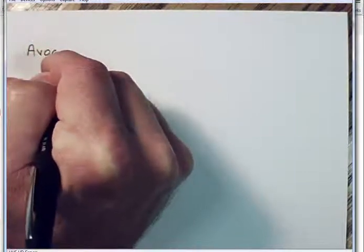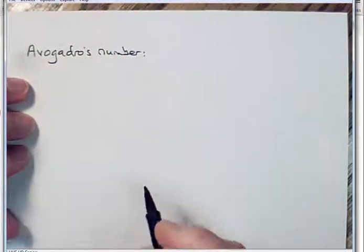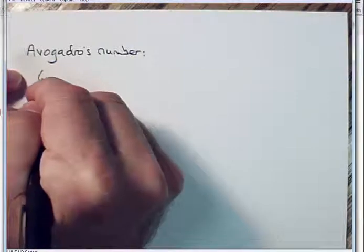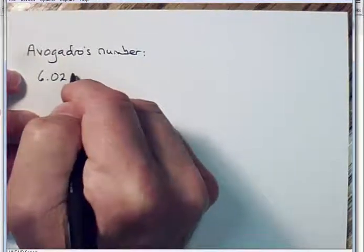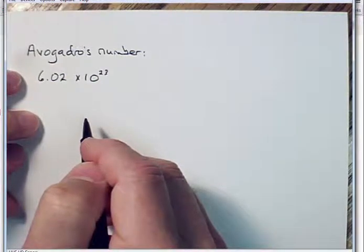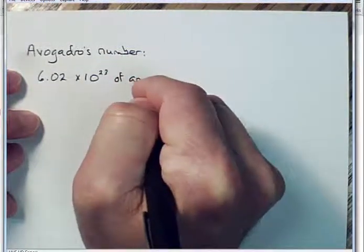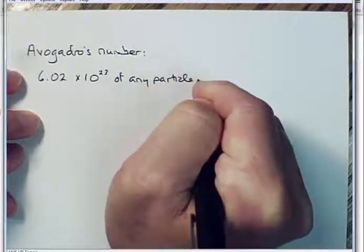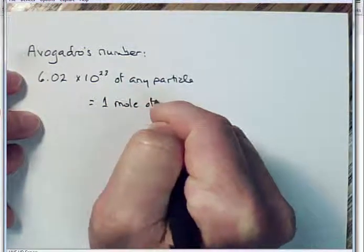And one of the things it's equal to is Avogadro's number. You need to know this. Avogadro's number. We've done this before. We talked about this in unit 1. We said that 6.02 and sometimes there's another 2 here so it really goes to 6.022. 6.02 times 10 to the 23rd power of any kind of particle, any kind of discrete thing, is equal to 1 mole of those particles.